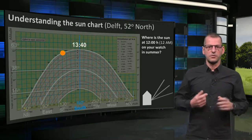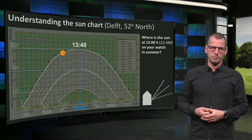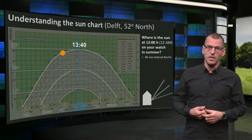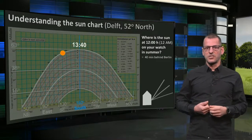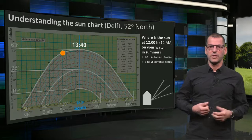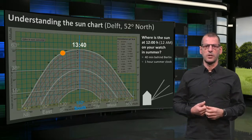First, Delft is about 40 minutes behind Berlin, which is the demarcation line for the Central European time. And, second, it's summer, so we live one hour later due to the summer clock shift.